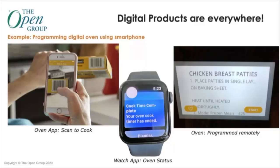Digital products are everywhere — this experience is profound and changing how you do almost anything. Mark's concern is that he expects the oven to last 20 years, not cycle as fast as a phone. He worries whether oven manufacturers know how to manage IT, alert users when backend systems are down, and handle the linked digital ecosystem that continues to evolve.